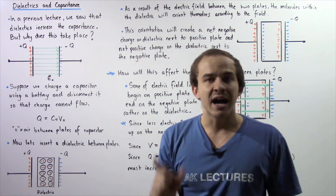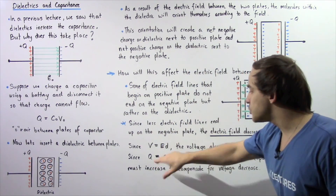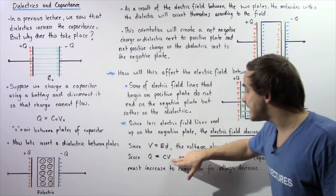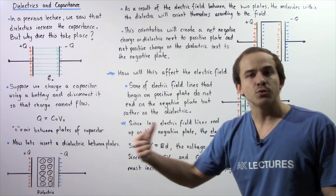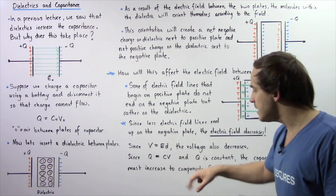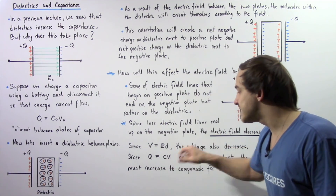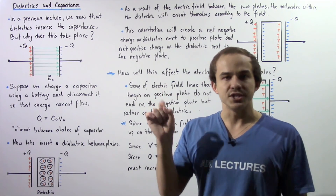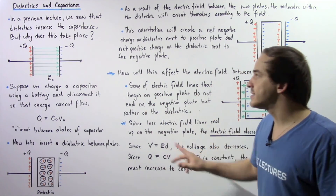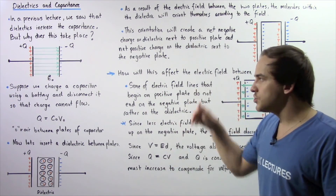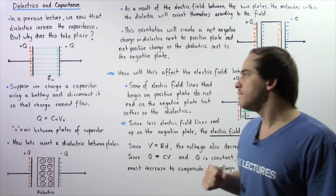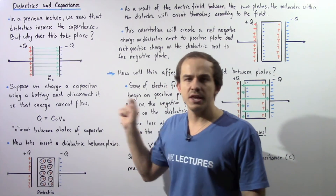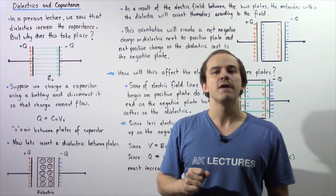So the charge must remain constant. Because charge is equal to C multiplied by V, and because our V decreases as a result of the decrease in electric field, our C must compensate for that decrease and the capacitance will increase. So we see our capacitance increases, the voltage decreases, and the electric field decreases when we place our dielectric between these two plates of our capacitor.